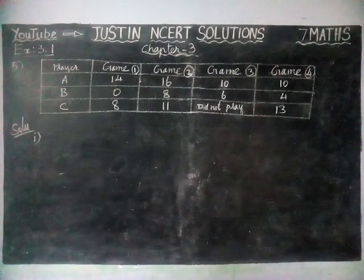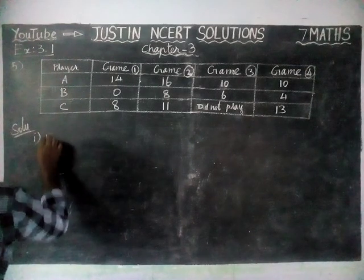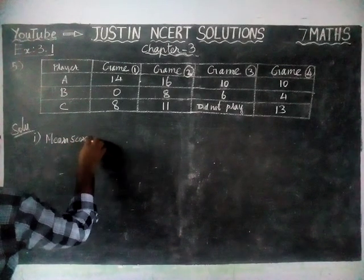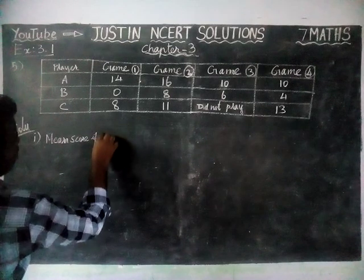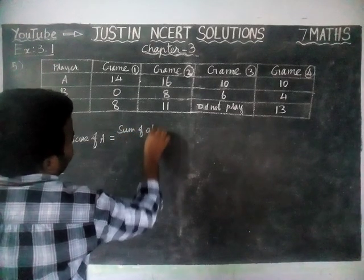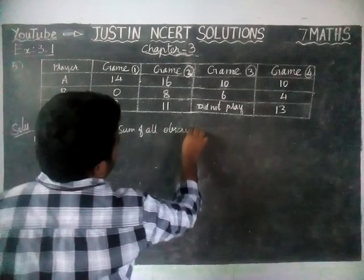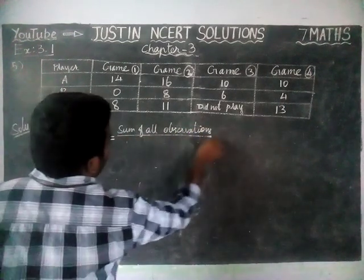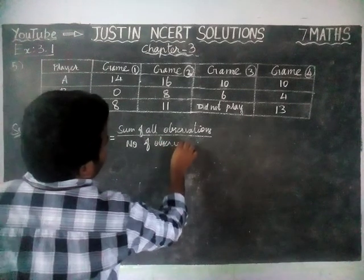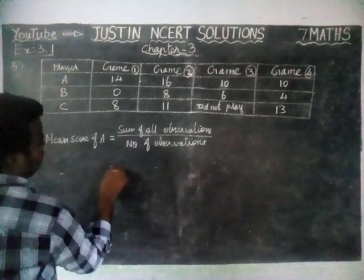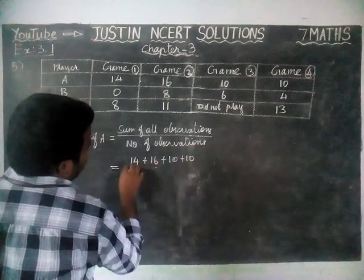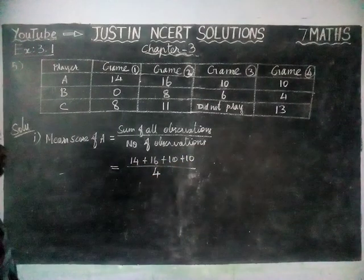First, we have to solve one by one. 1st question: what is the mean score? We are going to find the mean for player A. The mean score of A is equal to the sum of all observations divided by the number of observations. We are going to add all the points: 14 plus 16 plus 10 plus 10, divided by 4, since a total of 4 matches were played.